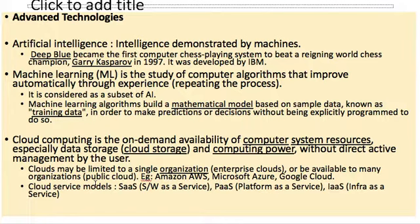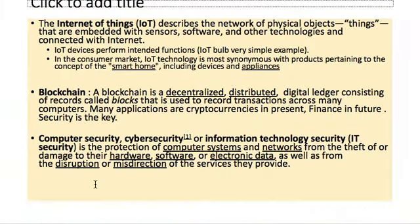Top cloud providers: Amazon Web Services (AWS), Microsoft Azure, and Google Cloud. Internet of Things (IoT) describes a network of physical objects embedded with sensors, software, and other technologies connected over the internet. Blockchain is a decentralized, distributed digital ledger consisting of records called blocks used to record transactions. It has major use in financial technology (fintech) and is one of the key upcoming technologies.